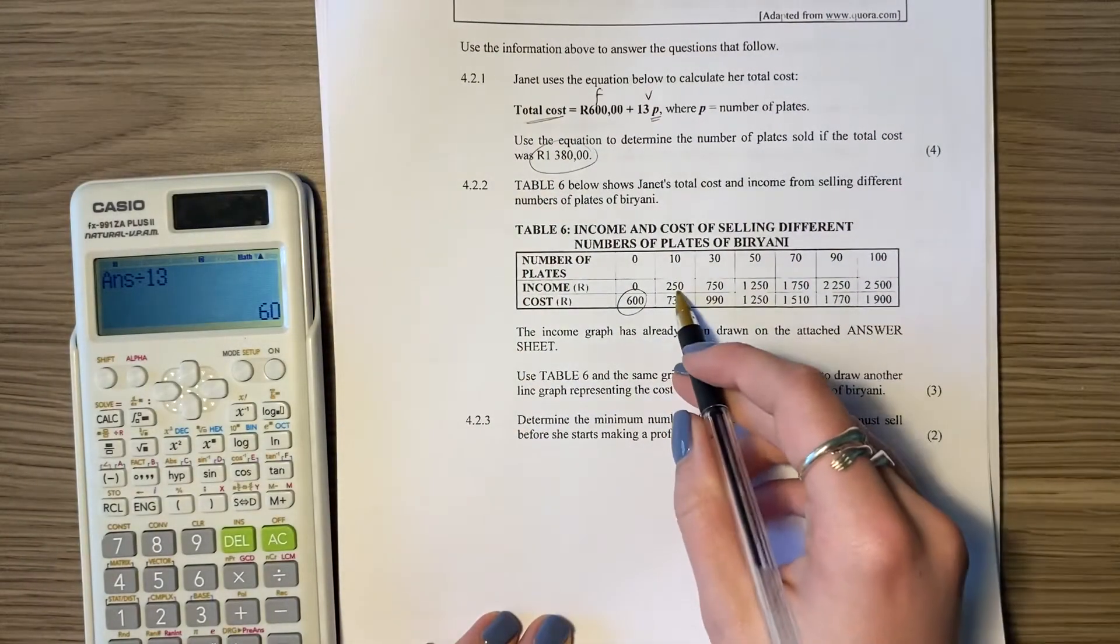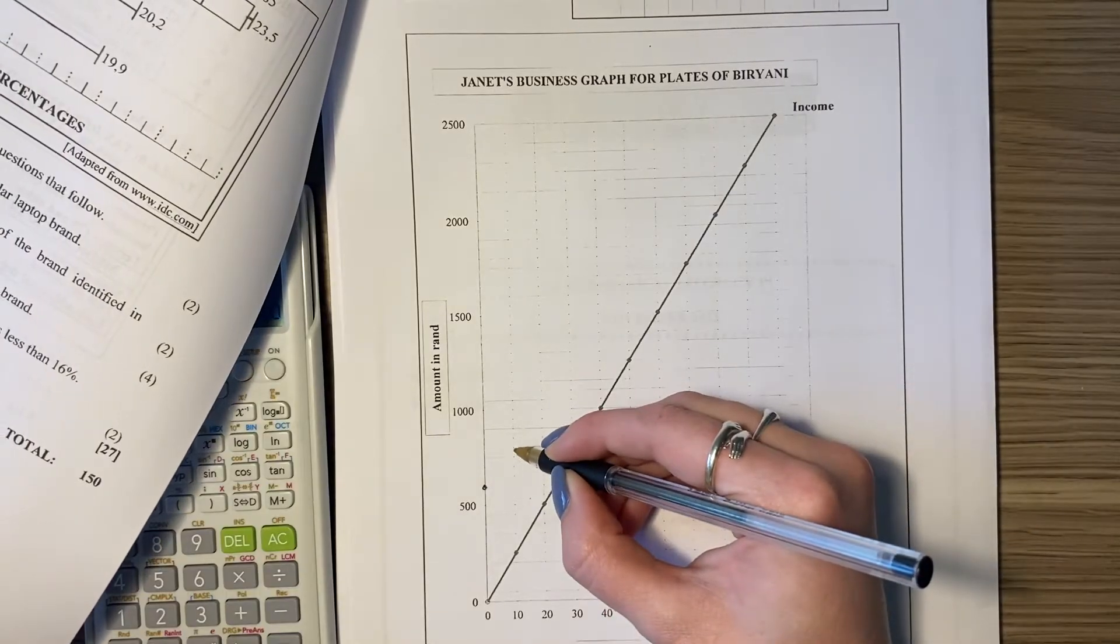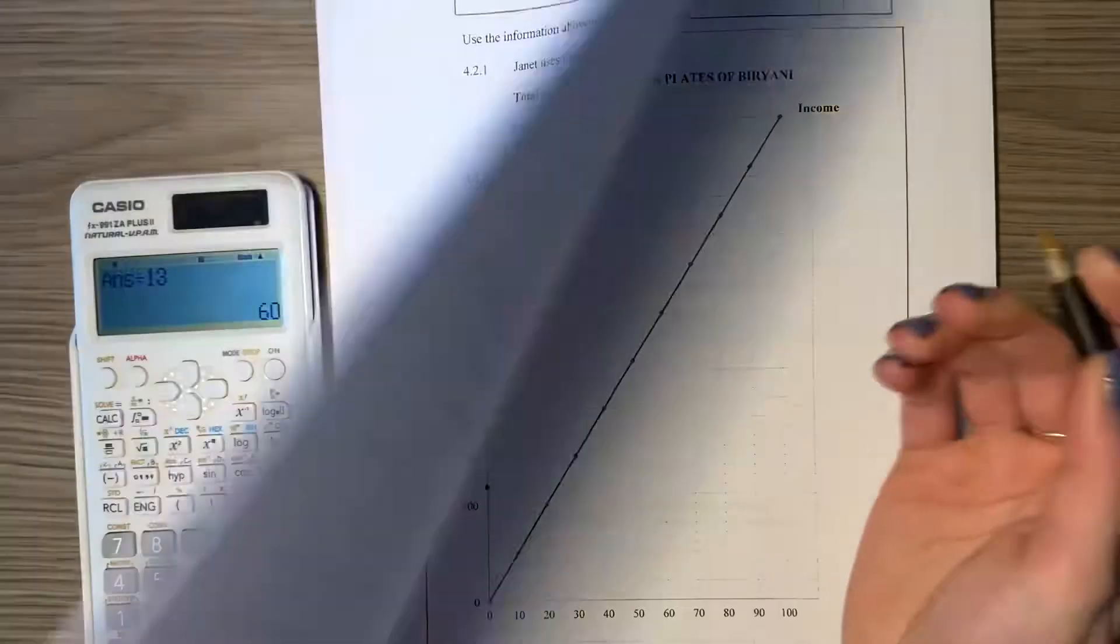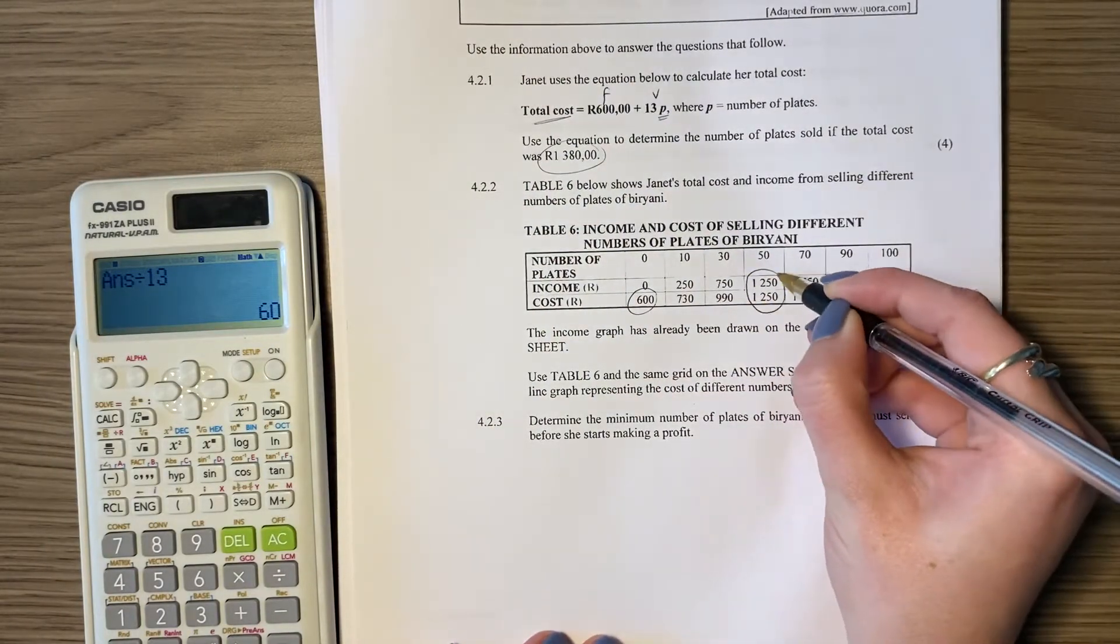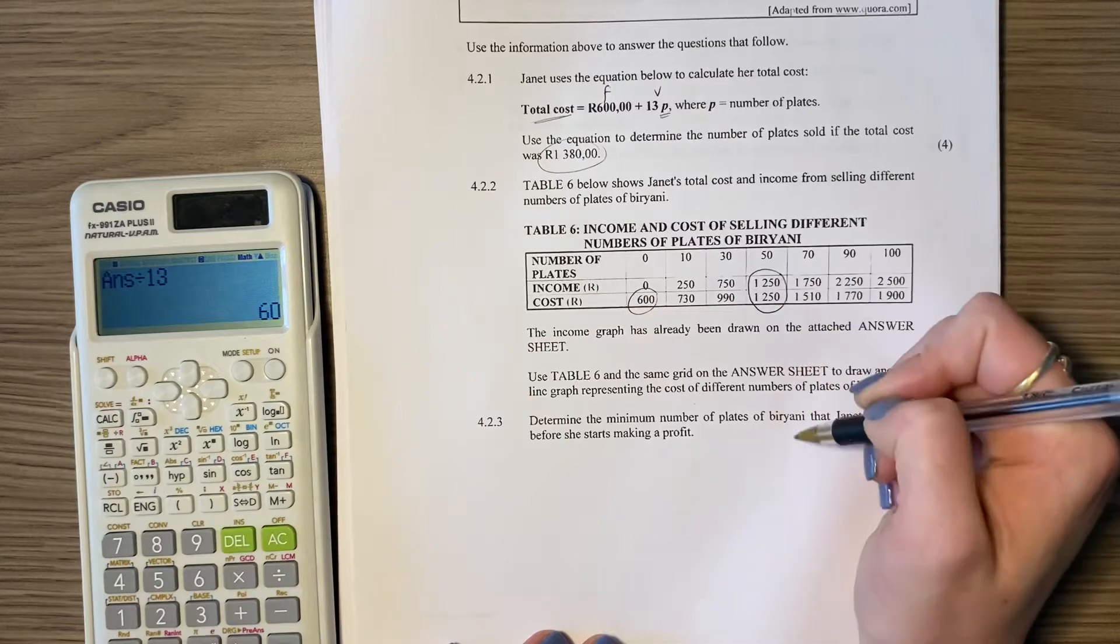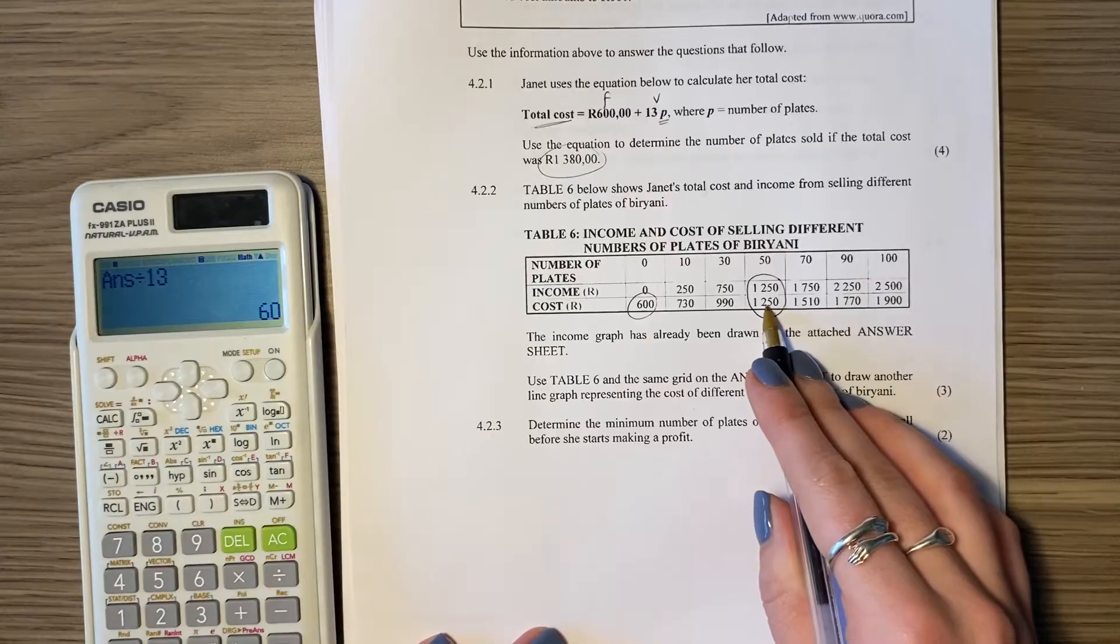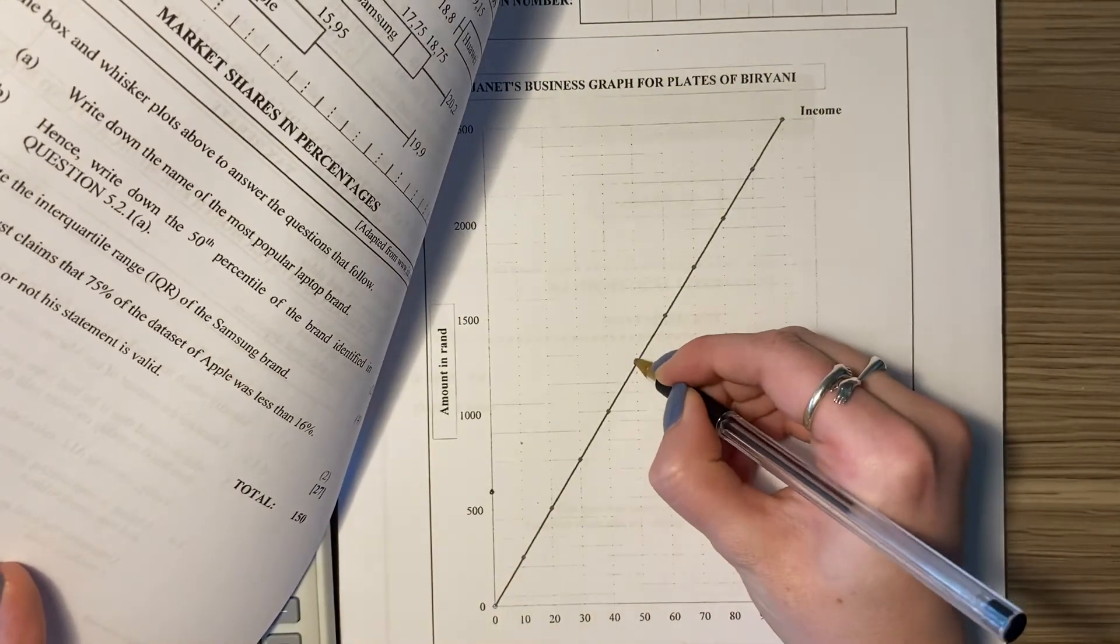Then at 10 it is, the cost is 730. So at 10, 730 is a little bit difficult to see but it's kind of like that. But the biggest thing is you want to plot the break-even point. Now this is the break-even point because my income equals my expenses. So let's go to 50, and we go to 50 and it is 1250. So 50, go up, and it's on that point there.